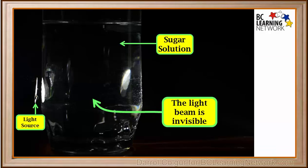Here's a picture of a light beam being shone through a sugar solution. The light source is on the left. The beam reflects on the glass, but it is invisible as it passes through the solution.